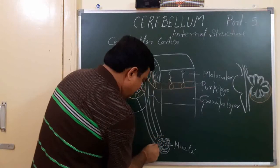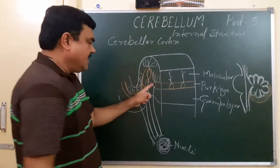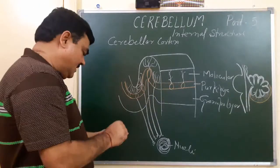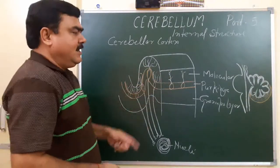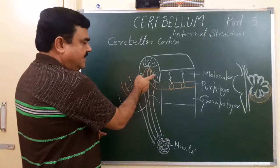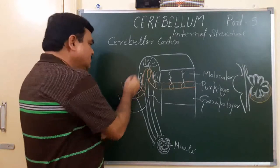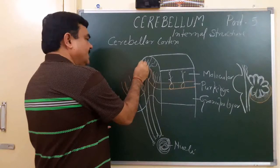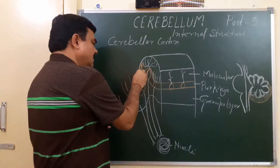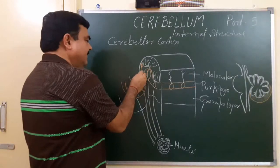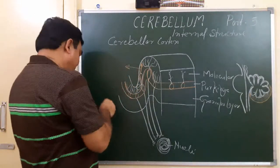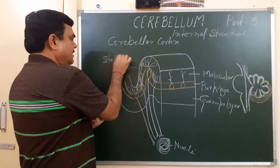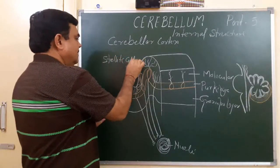Here you can see the axon, cell body, and dendrite of the Purkinje cells, and the Purkinje cell layer. In the molecular layer, the dendrites of the Purkinje cell layer are present. Also here is a star-shaped cell body of a neuron with dendrites and an axon — this is a stellate cell, a star-shaped cell.